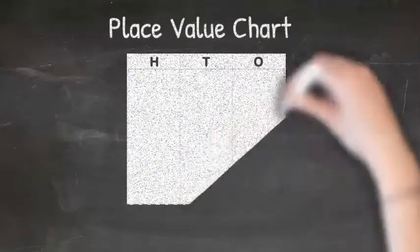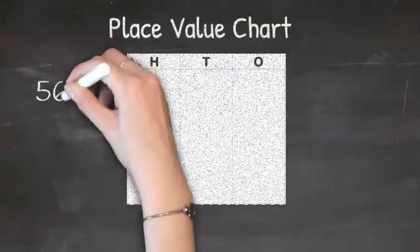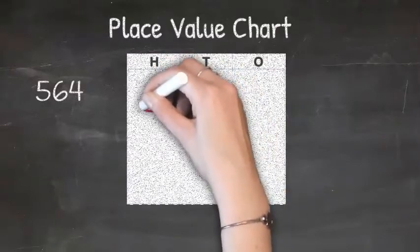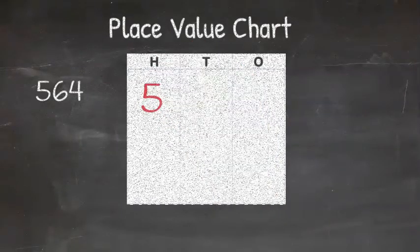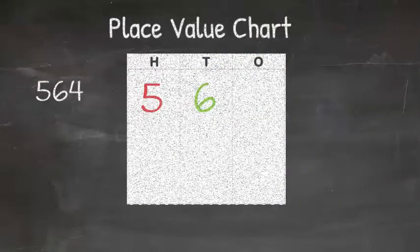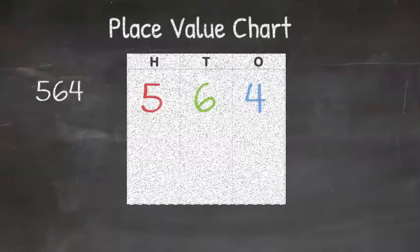Let's use the place value chart again. We will use the number 564. What does this mean for each individual digit? Well, using the chart, we can see that we have 5 hundreds or 500, 6 tens or 60, and then 4 ones or 4.